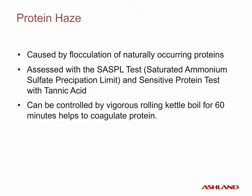Protein haze is caused by flocculation of naturally occurring proteins. The levels of haze-forming proteins are typically assessed using the SASPL test, based on titration with ammonium sulfate, or the sensitive protein test, based on titration with tannic acid. Protein levels can be controlled by use of a vigorous rolling boil for 60 minutes, which helps to coagulate protein.